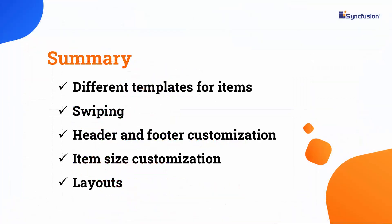In this video, I have shown how to apply different templates for items and how to apply alternate row styling. I also showed you how to enable swiping and customize the swipe templates, header, footer, and item size customization, and how to arrange items in different layouts. If you want to see the working example, you can download it from the GitHub link provided in this video's description. I have also included a link in the description where you can check if you qualify for our community license, which gives you a free license key for our entire .NET control suite. If you found this video useful, don't forget to click the like button and subscribe to our channel. Thanks for watching.